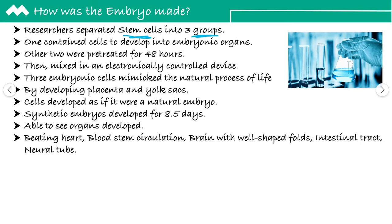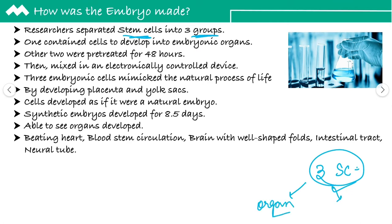Hota kya hai? Job fertilization ho jate hai uske baad, humari body ke andar jo embryo form hote hai, in the first week basically, tene type ke stem cells form ho jate hai body ke andar. Jo ek stem cell hota hai, woh humari organs and body tissues form karta hai. Aur baqi ke do stem cells jo hai, woh support karte hai embryo ke development mein.